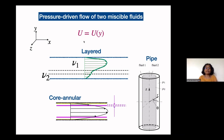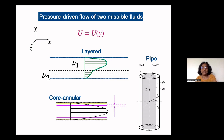In all of these flows, the base flow u is a function of y alone, where y is the normal direction and x is the flow direction. This is the kind of velocity profile displayed when the two viscosities are different.